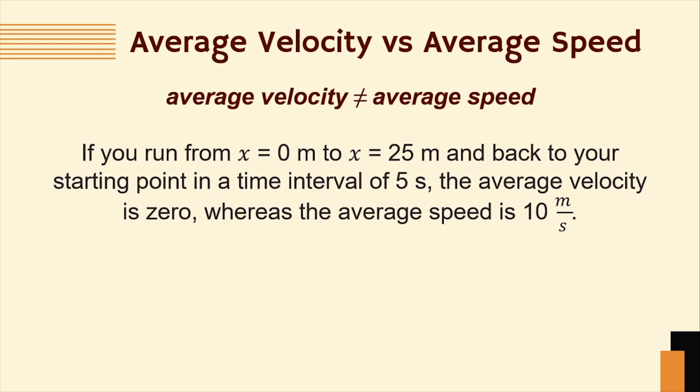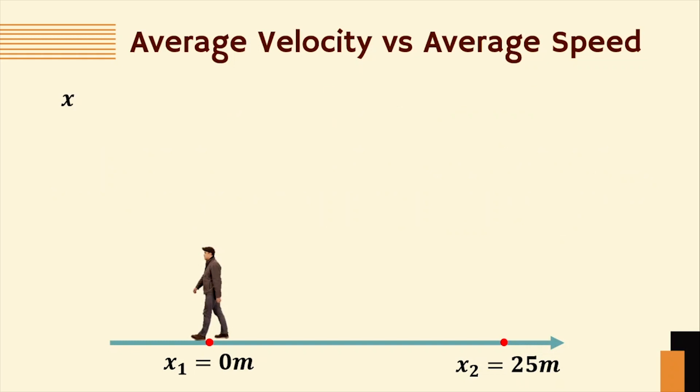Based on this problem, you are here at 0 meters. Let's say that is x sub 1. Then from here, you run up to 25 meters. Let's say that is x sub 2. Then you run back to your starting point. That means your initial and final positions are just the same. x sub i is equal to 0 meters and x sub f is also 0 meters. The time interval is 5 seconds and that is delta t.